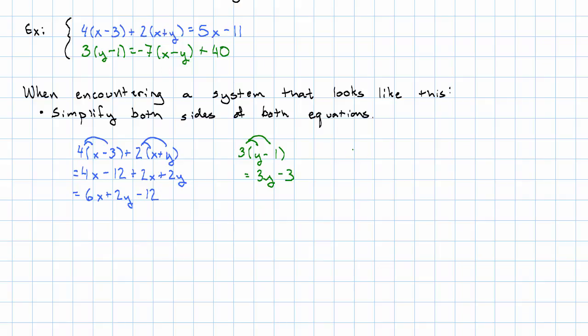And then on the right-hand side, we have negative 7x minus y plus 40. Distributing, we have -7x + 7y + 40. So now our system is: first equation, we simplified the left-hand side, didn't do anything on the right. Second equation, we simplified the left-hand side and the right-hand side.